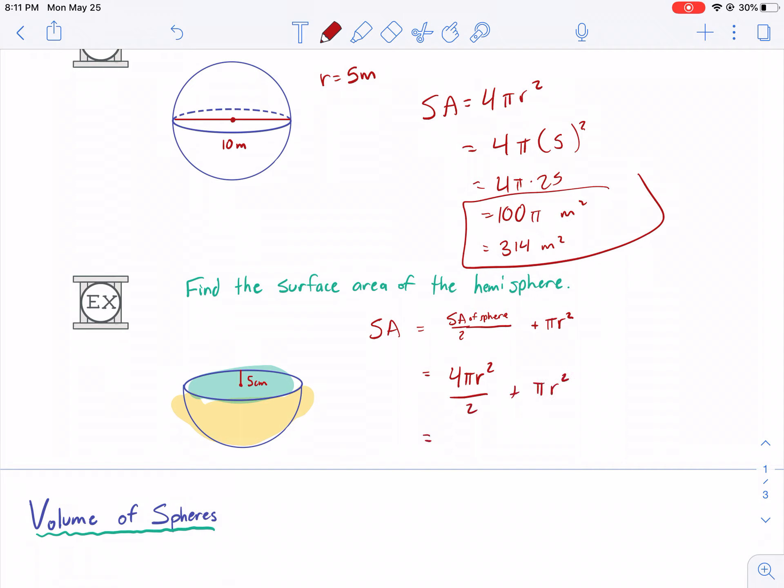We know that the radius is five, so let's go ahead and plug that in. We have four times pi times five squared divided by two plus pi times five squared. That is equal to 100 pi divided by two plus 25 pi. That's equal to 50 pi plus 25 pi or 75 pi centimeters squared.